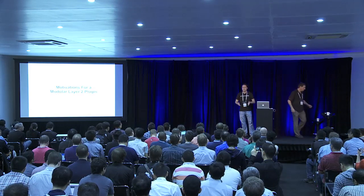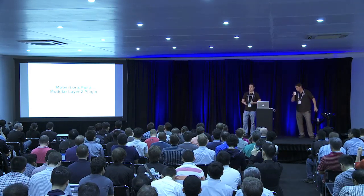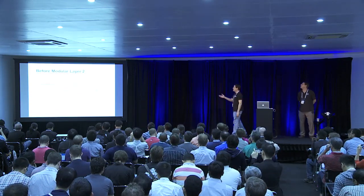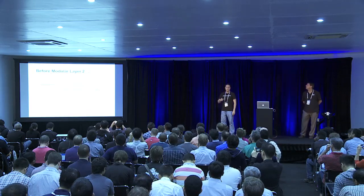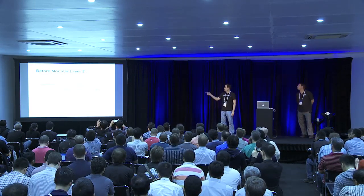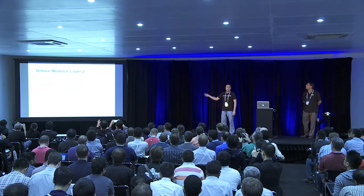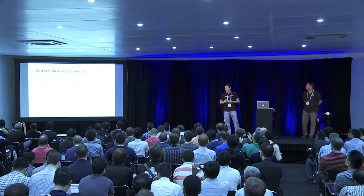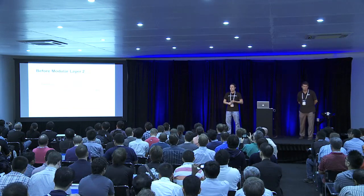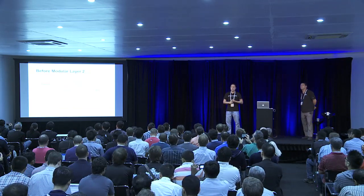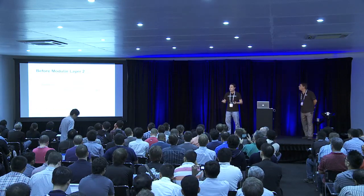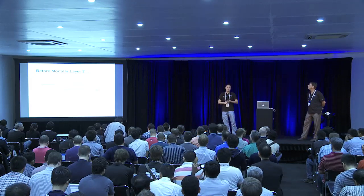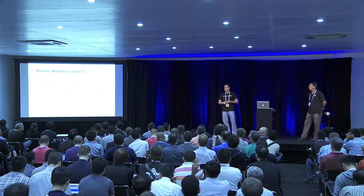The next section covers the motivations for why we decided to do the Modular Layer 2 plug-in. Before ML2, if you were going to use OpenStack Neutron, you were limited to the OpenVSwitch plug-in, the Linux Bridge plug-in, or a specific vendor plug-in. Neutron effectively supported a single plug-in at a time — a big limitation for people who wanted to deploy and use multiple technologies, whether multiple vendor technologies or multiple hypervisors like Hyper-V, KVM, or VMware.